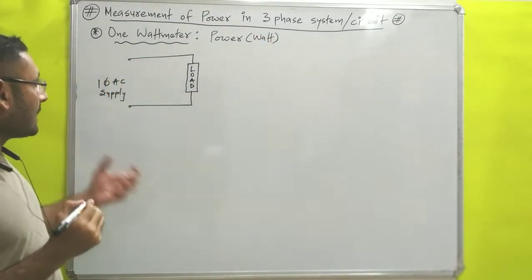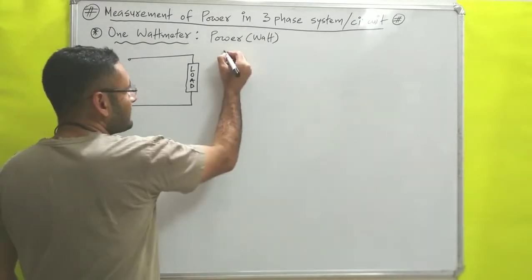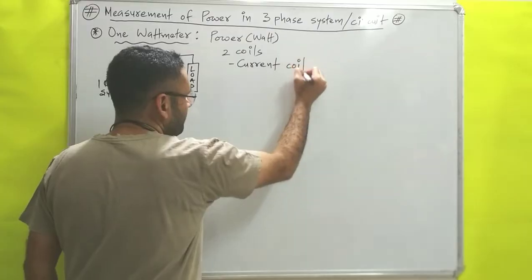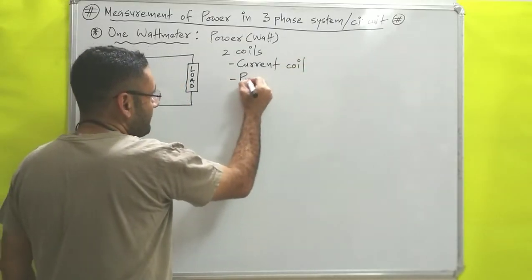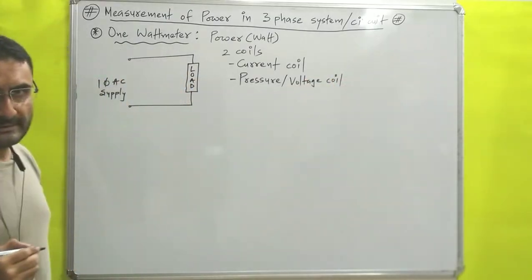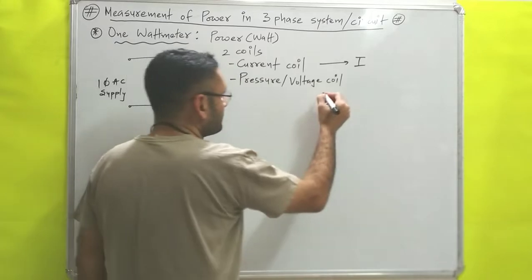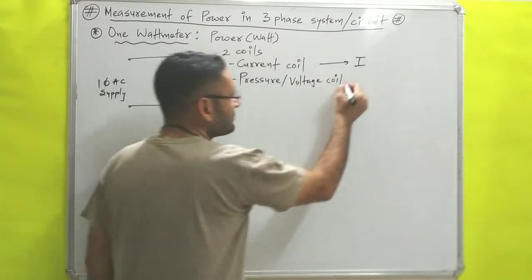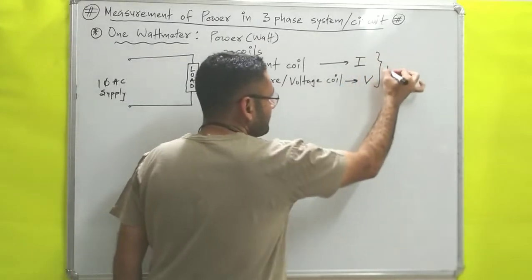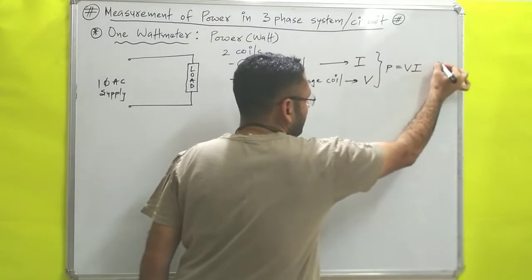Now, how does a wattmeter measure power? In the wattmeter, basically two coils are there. The first coil is known as the current coil and the next coil is known as the pressure coil, or more specifically the voltage coil. The current coil will measure the current I in amperes, and the pressure coil will measure the voltage V. We know that power equals V into I, so multiplying V and I gives us the power in watts.